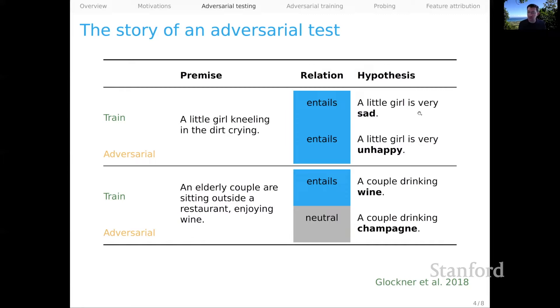And they simply use lexical resources to change the hypothesis by one word so that it now reads, a little girl is very unhappy. We would expect a system that truly understood the reasoning involved in these examples to continue to predict entail in the second case, because these examples are roughly synonymous. But what they found is that systems would often start to predict contradiction, possibly because of the negation that occurs here.